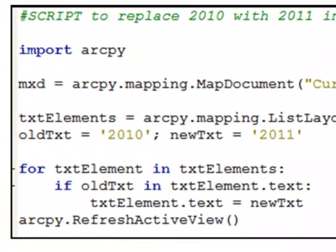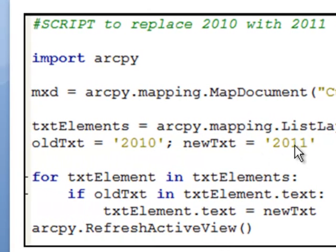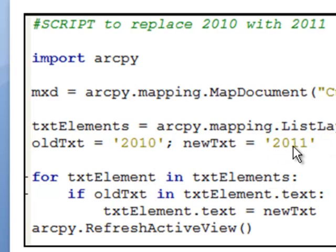Another useful thing ArcPy mapping can do is replace text in a map layout. Here's an example: we've got a map produced in 2010 and we want the same map with the date changed to 2011. We make our map document object, get a list of all layout elements that are text elements, set old text as 2010 and new text as 2011, then loop through every text element. If 2010 is in the text element's text property, we assign 2011 — replacing 2010 with the new text.